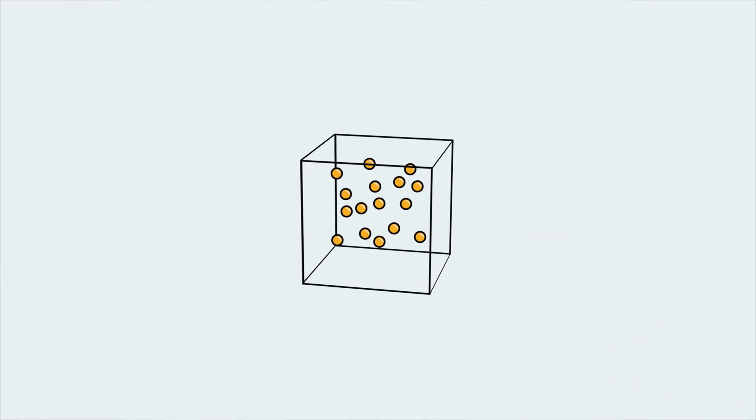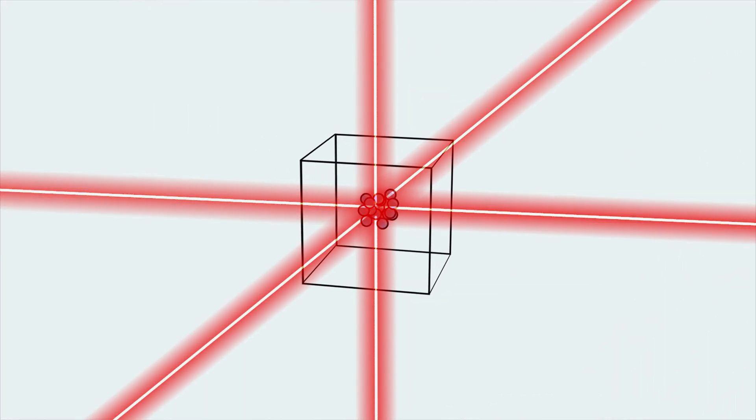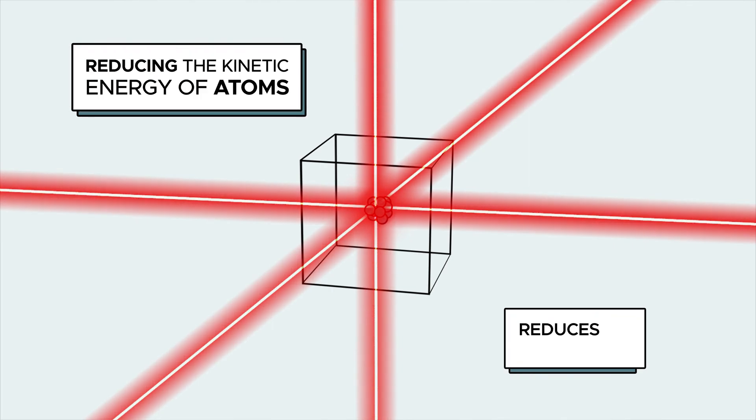To chill them further, we bombard them with lasers from all sides to slow them down because reducing the kinetic energy of atoms reduces their temperature.